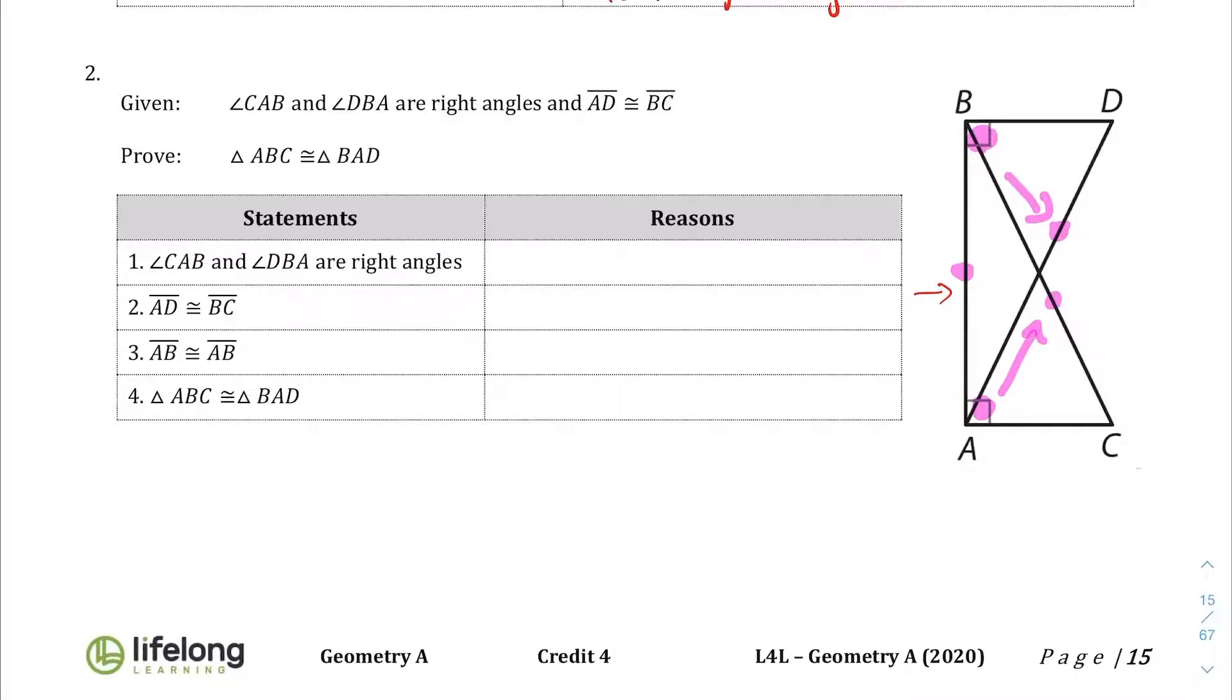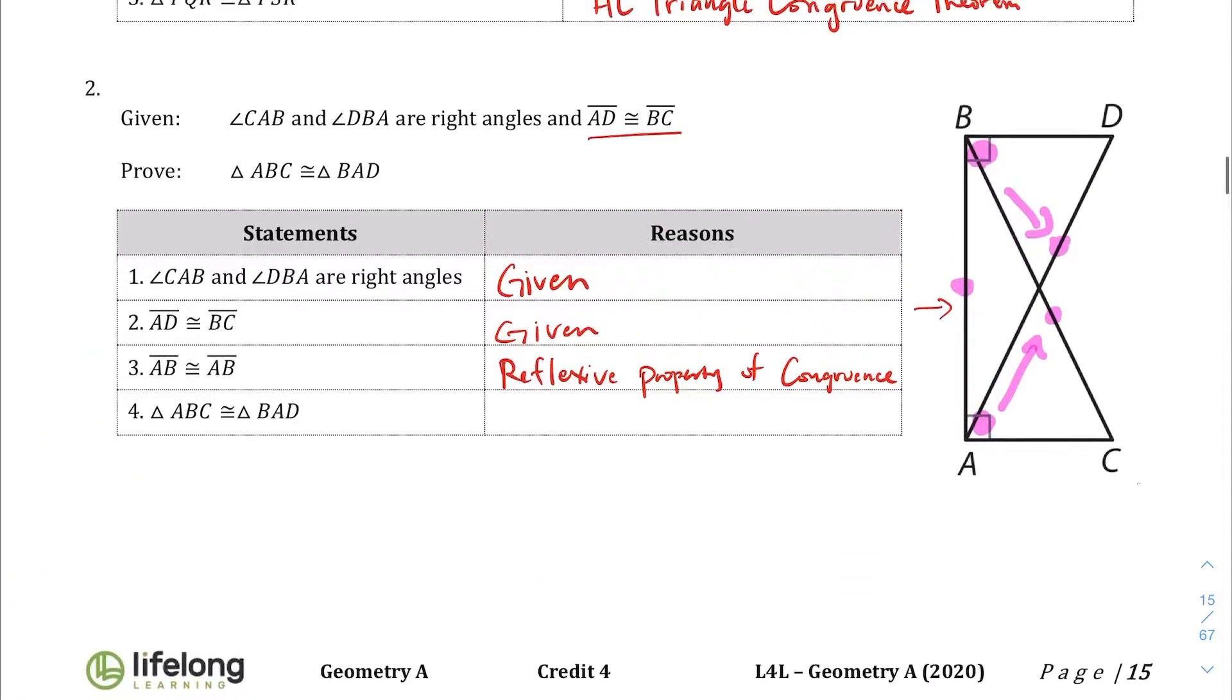CAB and DBA are right angles. That is given. AD being congruent to BC is also given right here. AB being congruent to AB that's just a reflexive property again. Reflexive property of congruence. And then lastly triangle ABC being congruent to triangle BAD is the hypotenuse-leg triangle congruence theorem. That we've been working on.